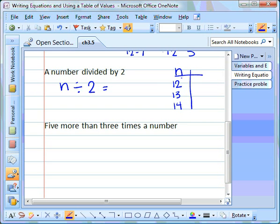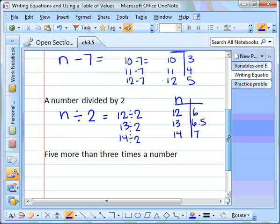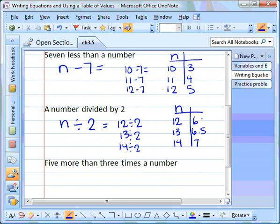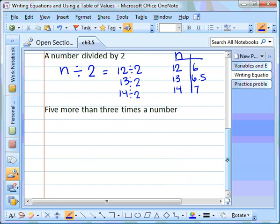Notice that the values I have are in order, 12, 13, 14. And let's see if our pattern sticks around. If we substitute in 12 for n, 12 divided by 2 is going to equal 6. Let's substitute 13 in for n, 13 divided by 2 is going to equal 6.5. And 14 divided by 2 is going to equal 7. Note that our answers are again in order, but they are not whole numbers. We have one that has a decimal in it.